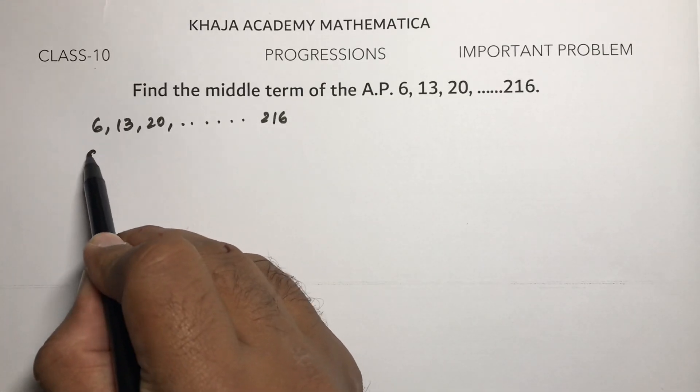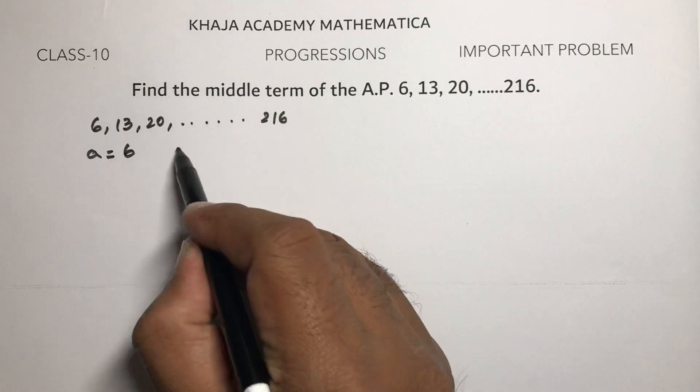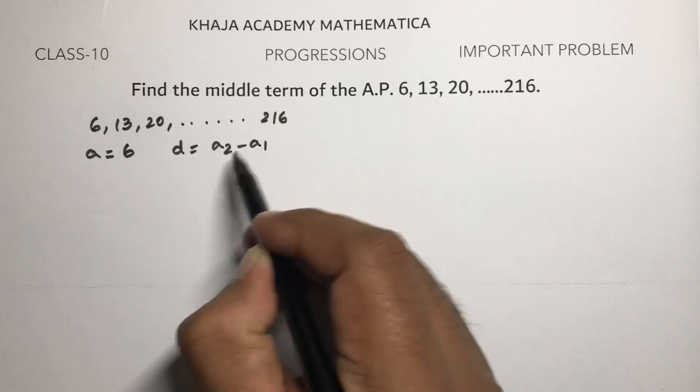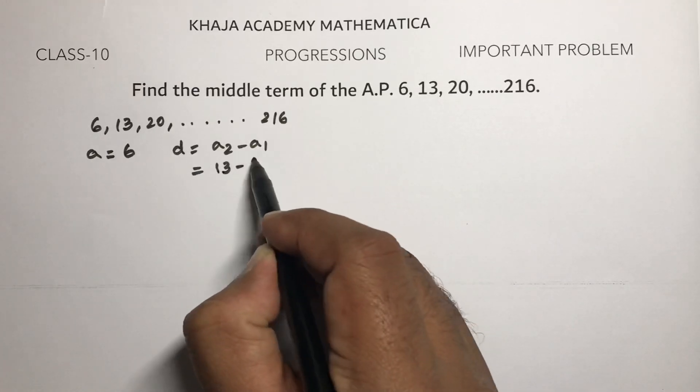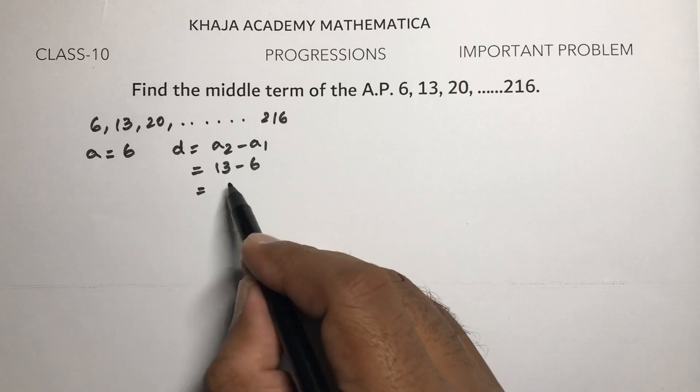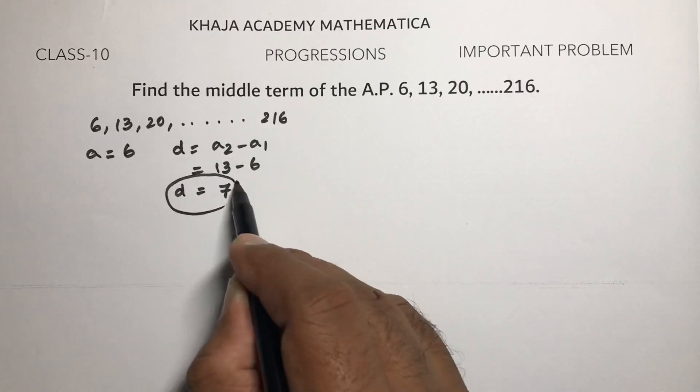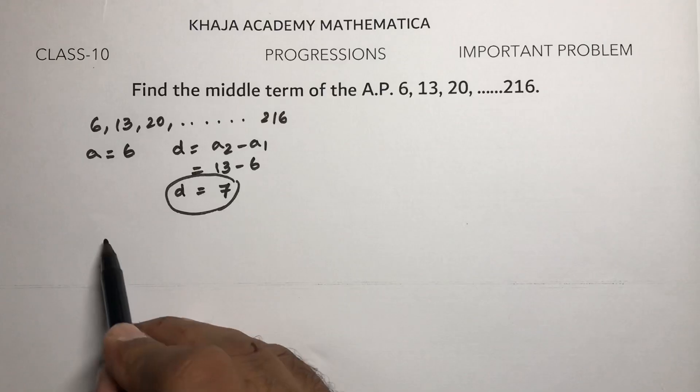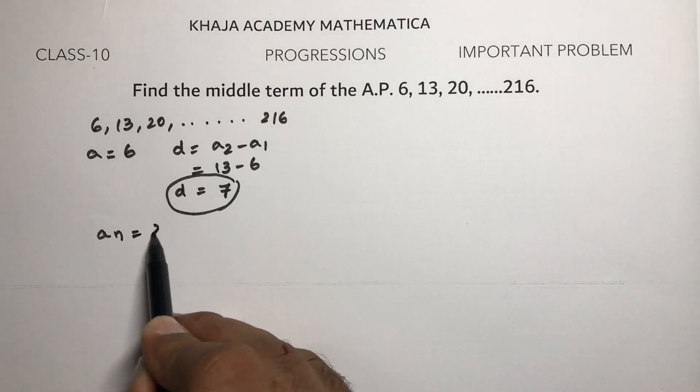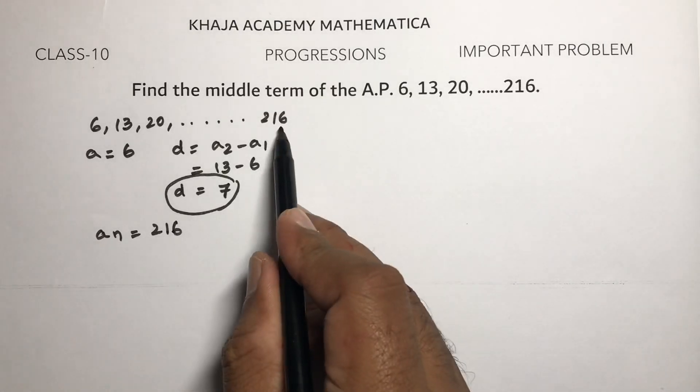Here the value of a is 6. Common difference is a₂ minus a₁, so 13 minus 6, which is 7. So common difference d is 7, first term a is 6, and aₙ equals 216.